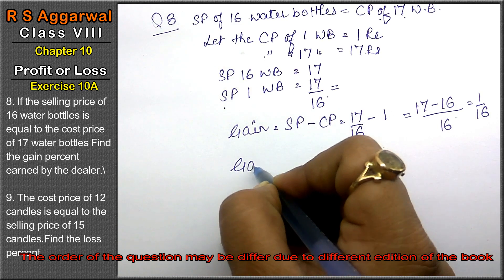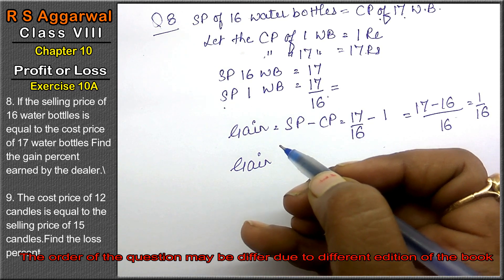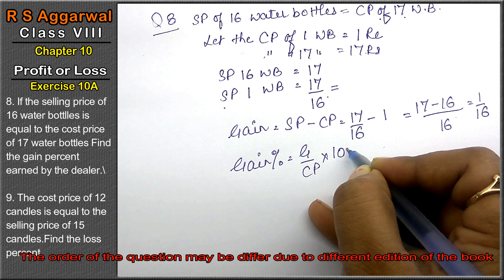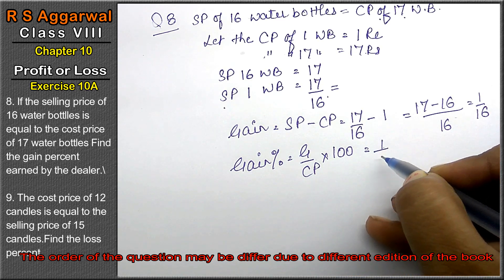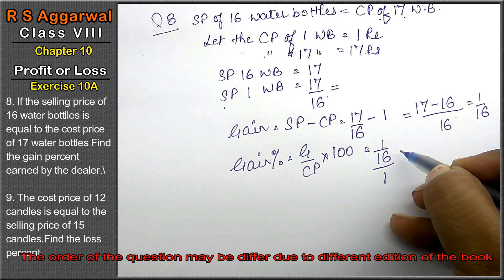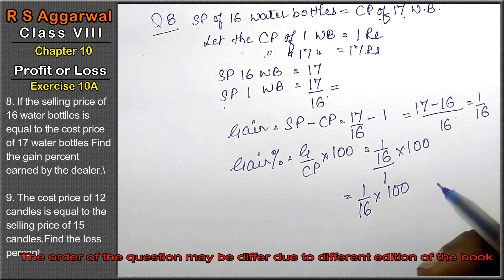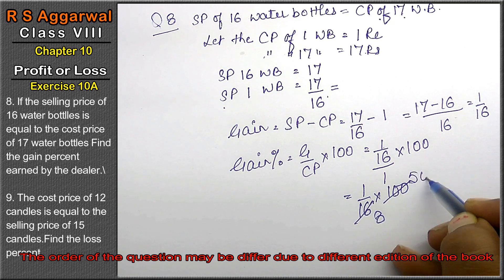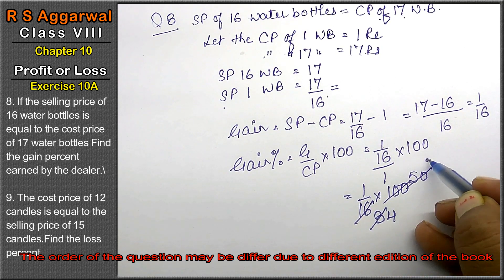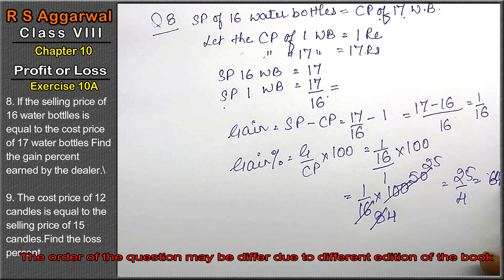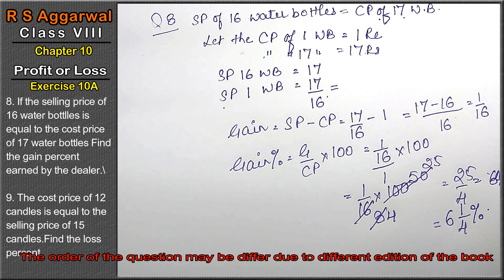Now we apply the gain percentage formula, because we have to find the gain percent earned by the dealer. Gain percent equals gain upon CP into 100. Gain is 1 upon 16, CP is 1, into 100. That gives us 100 upon 16, which simplifies to 25 upon 4, or 6 whole 1 upon 4 percent. So the answer is 6¼%.